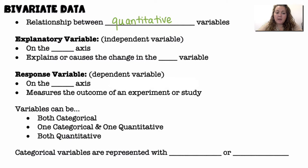Explanatory variable, or independent variable, is on the x-axis. It explains or causes the change in the y variable. Our response variable, or dependent variable, is on the y-axis, and it measures the outcomes of the experiment or study.